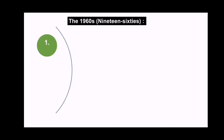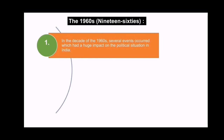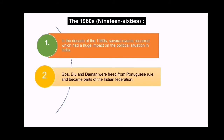Coming to the first point: in the decade of the 1960s, several events occurred which had a huge impact on the political situation in India. The next point is that Goa, Diu, and Daman were freed from Portuguese rule and became parts of the Indian federation. In 1960, Goa, Diu, and Daman came into our hands, having been under Portuguese rule. Federation means a country which is a combination of states and union territories.